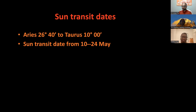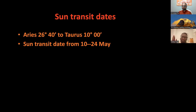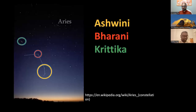Kritika nakshatra spans from 26 degrees 40 minutes of Aries to 10 degrees of Taurus. Annually, when the sun transits this part of the zodiac, it is from around 10th May to 24th May.